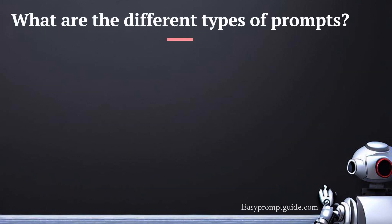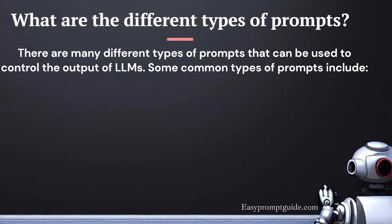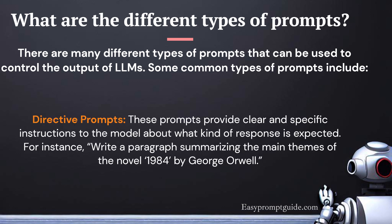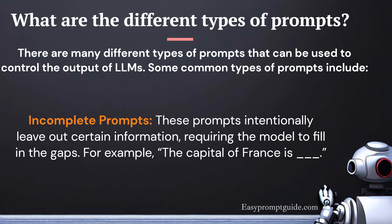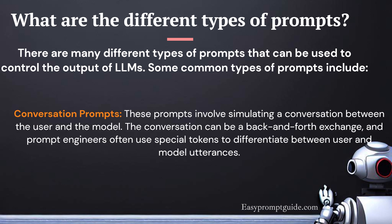What are the different types of prompts? There are many different types of prompts that can be used to control the output of LLMs. Some common types include directive prompts, which provide clear and specific instructions to the model about what kind of response is expected. For instance, write a paragraph summarizing the main themes of the novel 1984 by George Orwell. Incomplete prompts intentionally leave out certain information, requiring the model to fill in the gaps — for example, 'the capital of France is'. Conversation prompts involve simulating a conversation between the user and the model, often using special tokens to differentiate between user and model utterances.